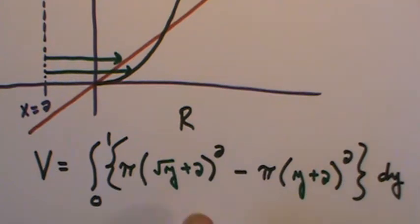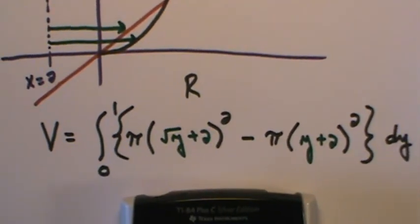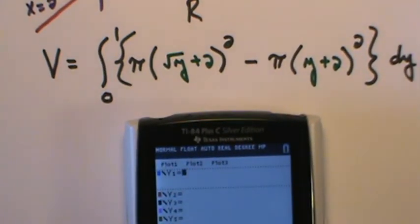Now as these become a little bit more challenging, I'll put them in the calculator. I'll let the calculator do most of the work. So when I set this one up, I'll do my pi, parenthesis, radical x. Remember when you go into calculator, everything's got to be x. Plus 2, close parenthesis, square it.